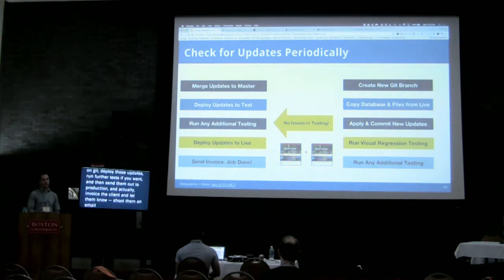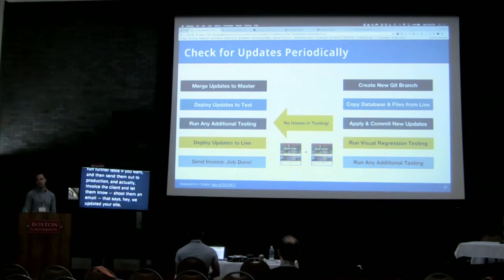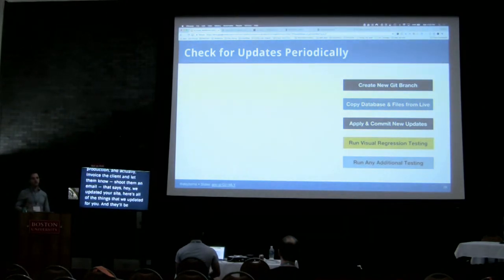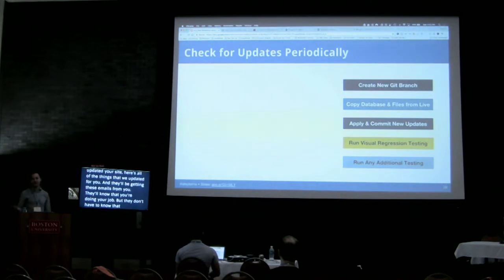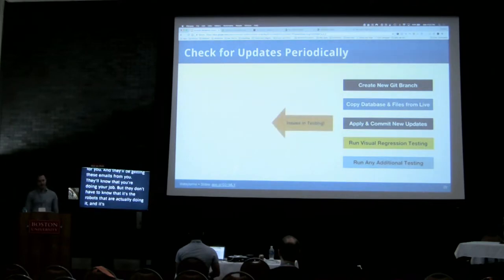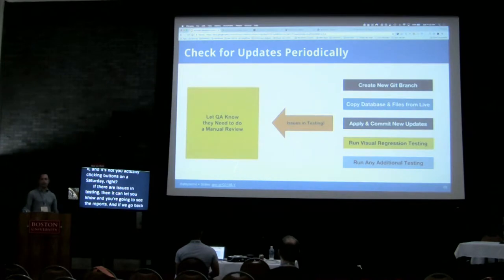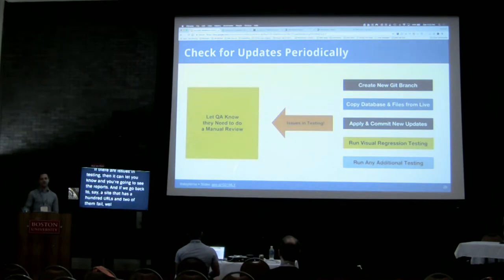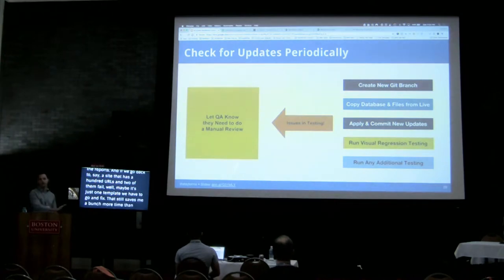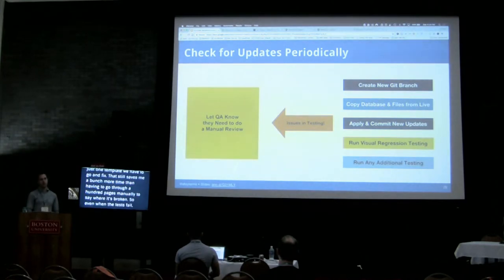They'll be getting these emails from you — they'll know you're doing your job. But they don't have to know that robots are actually doing it. If there are issues in testing, it can let you know and you'll see the reports. If a site has 100 URLs and only two of them fail, maybe it's just one template we have to go fix. That still saves me a bunch of time versus manually looking at 100 pages. So even when tests fail, it's saving you time because it's doing the bulk of the QA and pointing out the problems.